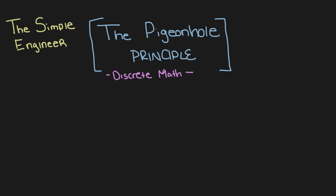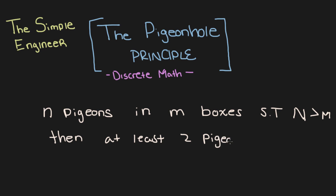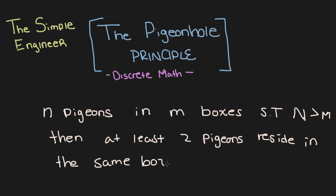Now let's delve into how to solve these types of problems and what formulas are presented. The principle states that if n pigeons are in m boxes such that n is greater than m, then at least two pigeons reside in the same box.